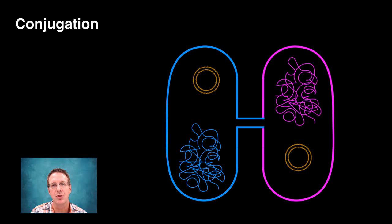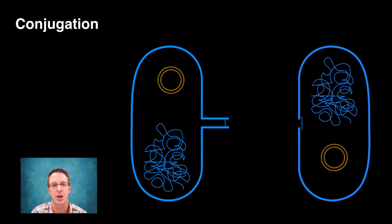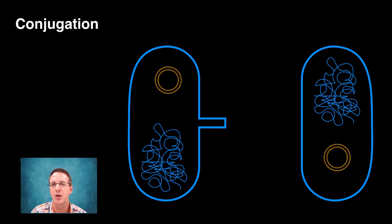So conjugation ends when the two cells separate from each other, but you notice now that due to the presence of the F-plasmid in both cells, they are both males, which, of course, begs the question, why then aren't all bacteria males?